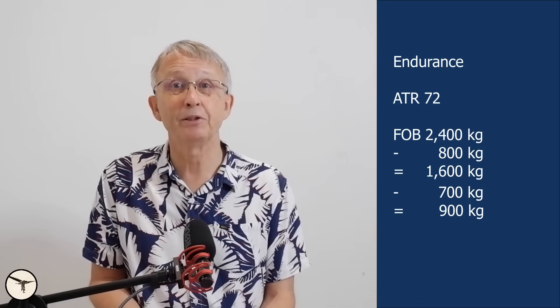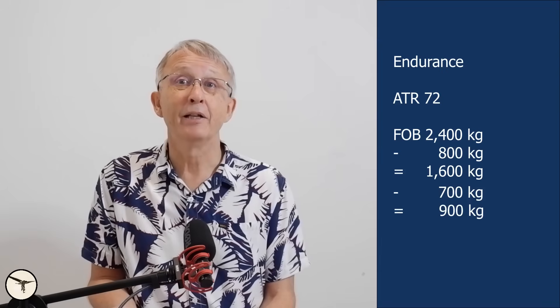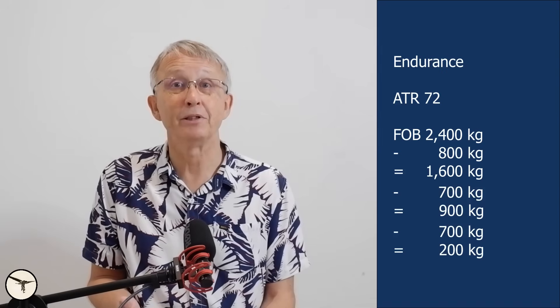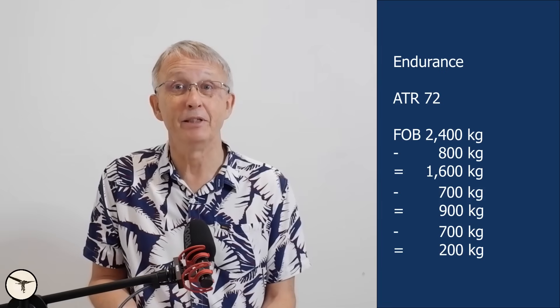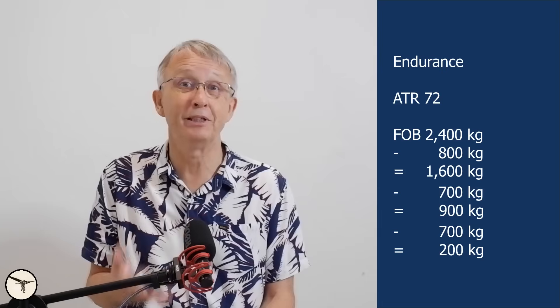Rule 5: Need a quick estimate for how much fuel you need from point A to point B? Here's a simple planning method for the ATR-72: first hour, 800 kg of fuel; each additional hour, 700 kg per hour. For example, with 2,400 kg on board — after 1 hour you have 1,600 kg remaining; after 2 hours, 900 kg; after 3 hours, 200 kg — time to be on the ground. This method is intentionally conservative; actual fuel burn is typically lower. For holding patterns, plan on 600 kg per hour, or 10 kg per minute.